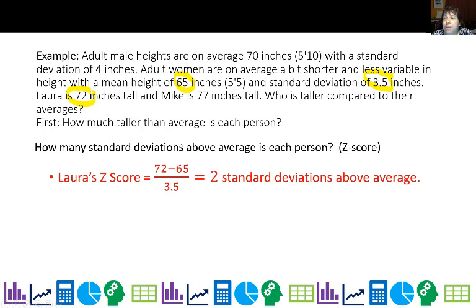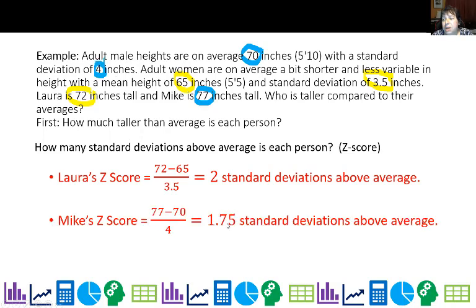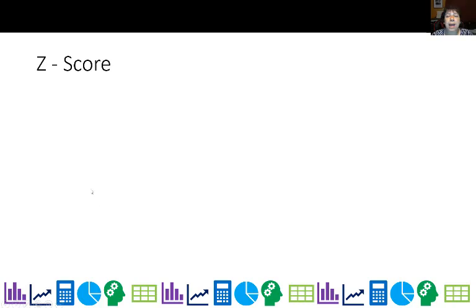And I can say that Laura is two standard deviations above the mean or the average. I can do the same thing with Mike. He's 77 inches tall compared to 70 and the standard deviation is four inches. So when I divide that out, I get 1.75 standard deviations above the average. So who's taller compared to their group? Based on the spread, Laura seems a little further out in the population compared to Mike. So Laura's taller compared to her group.